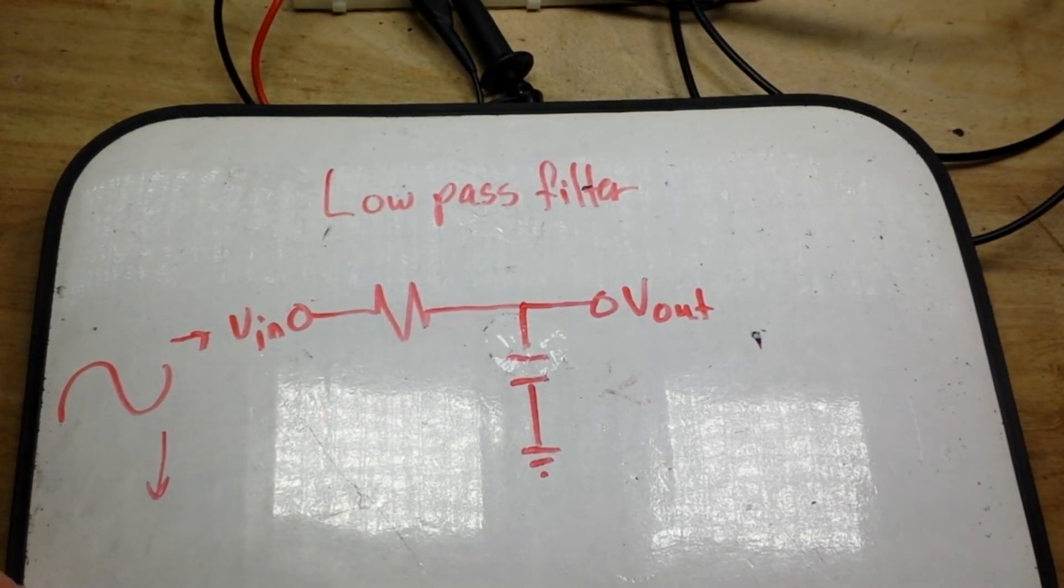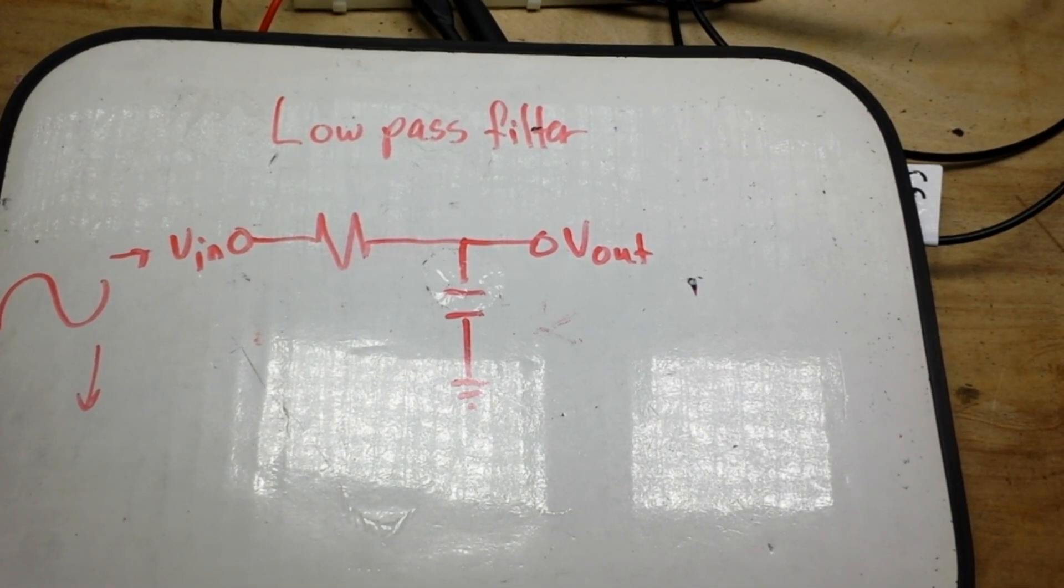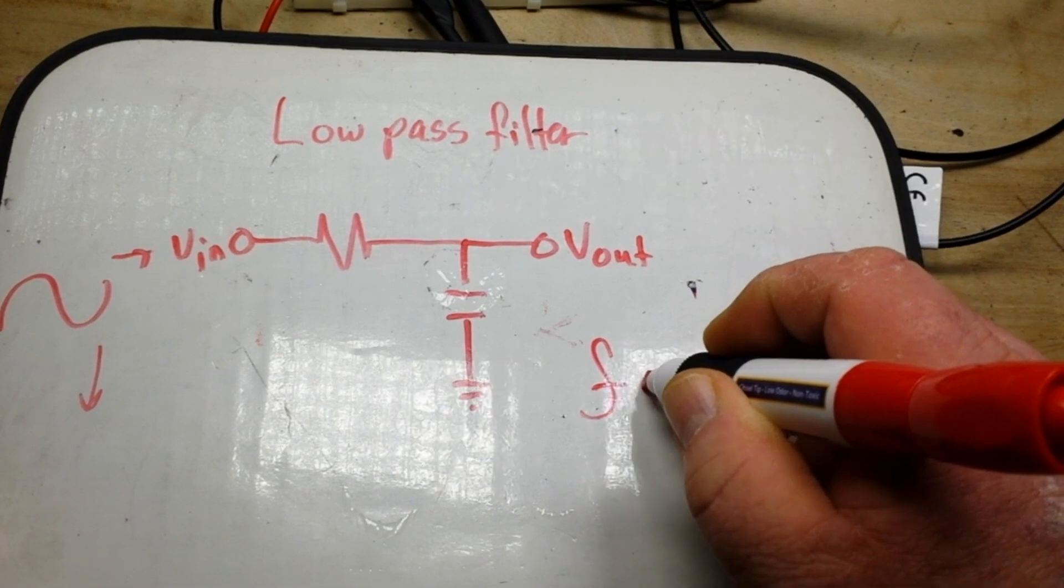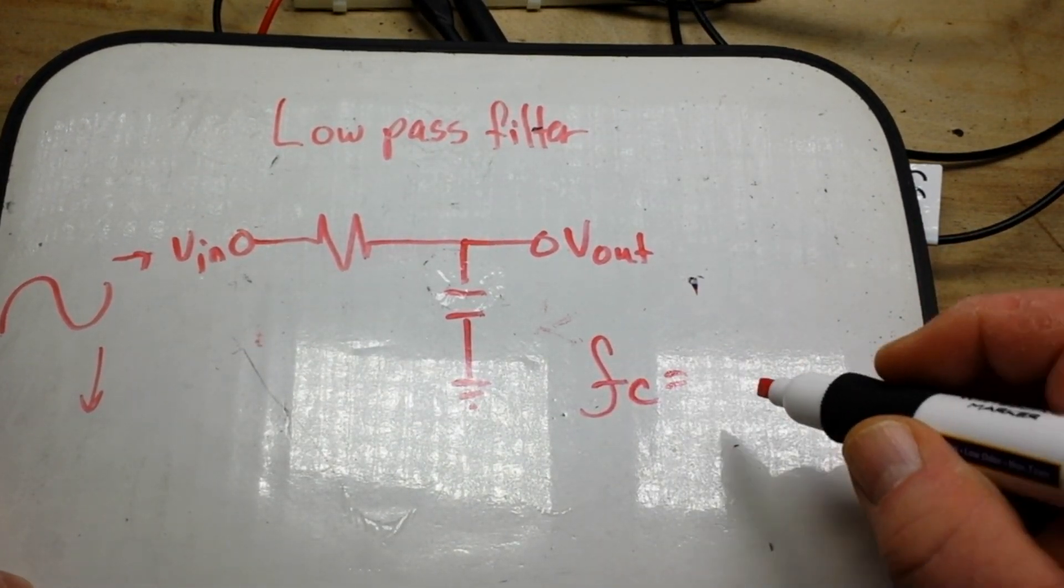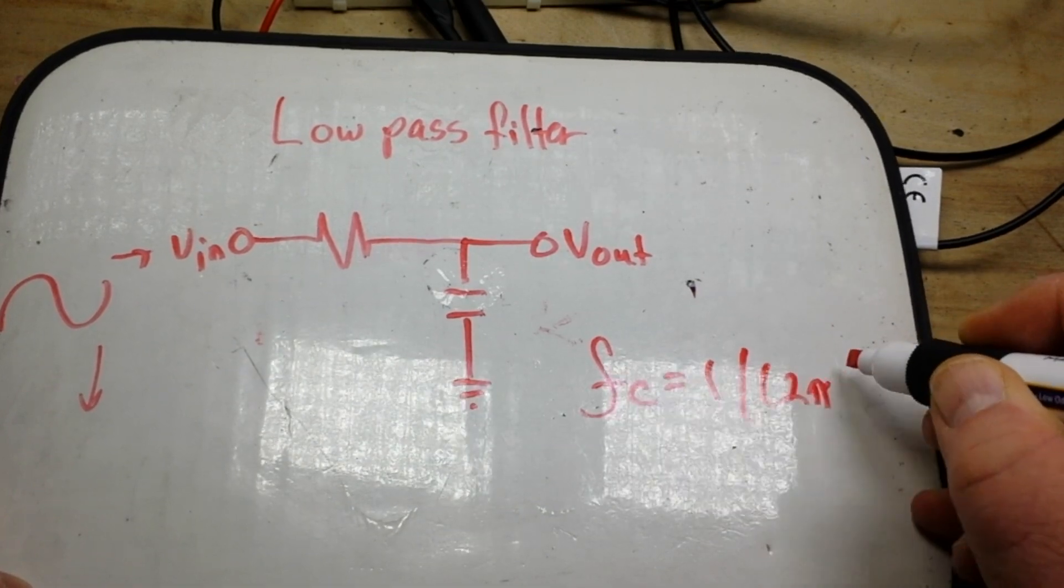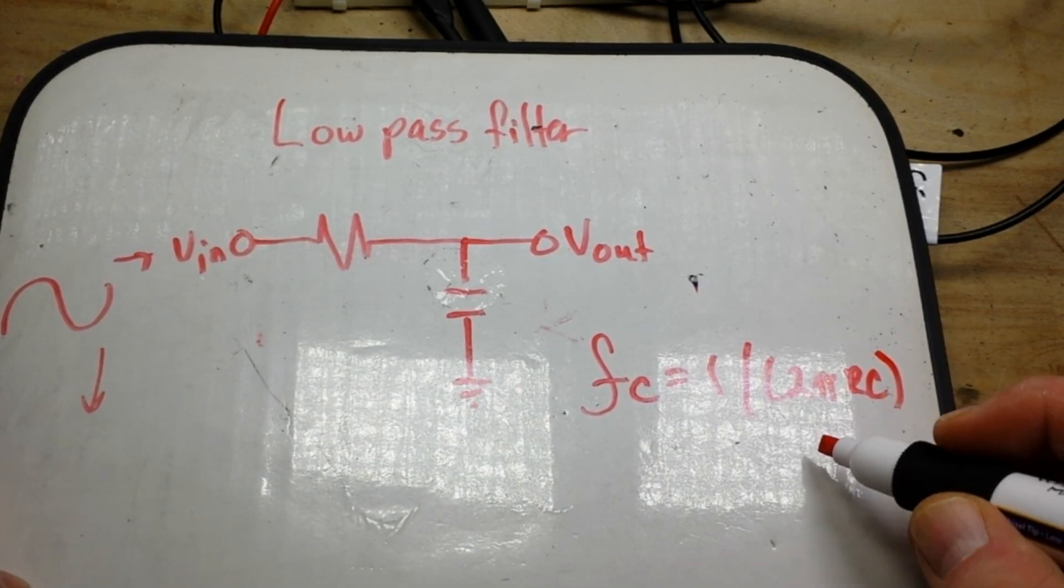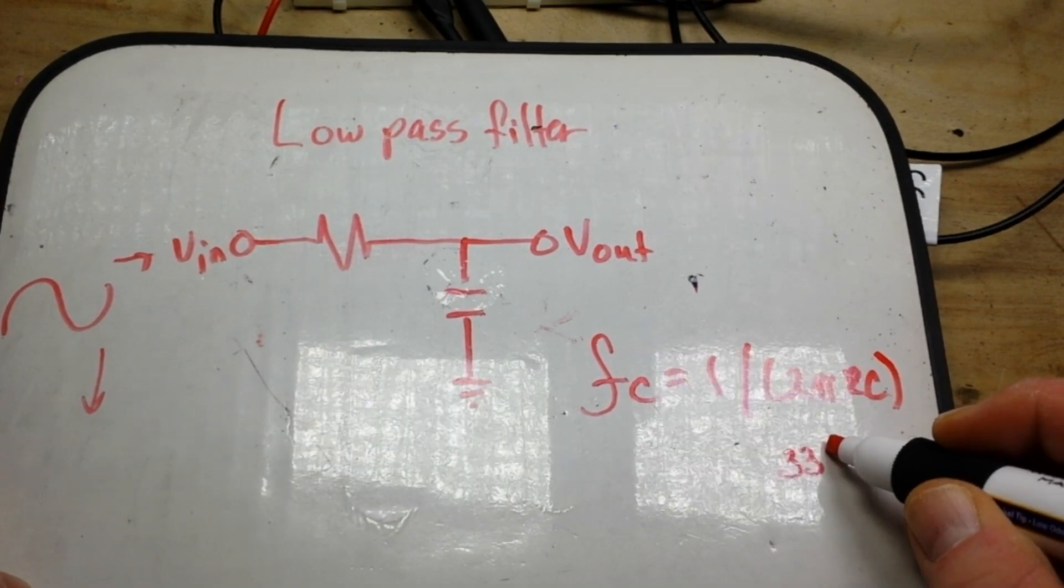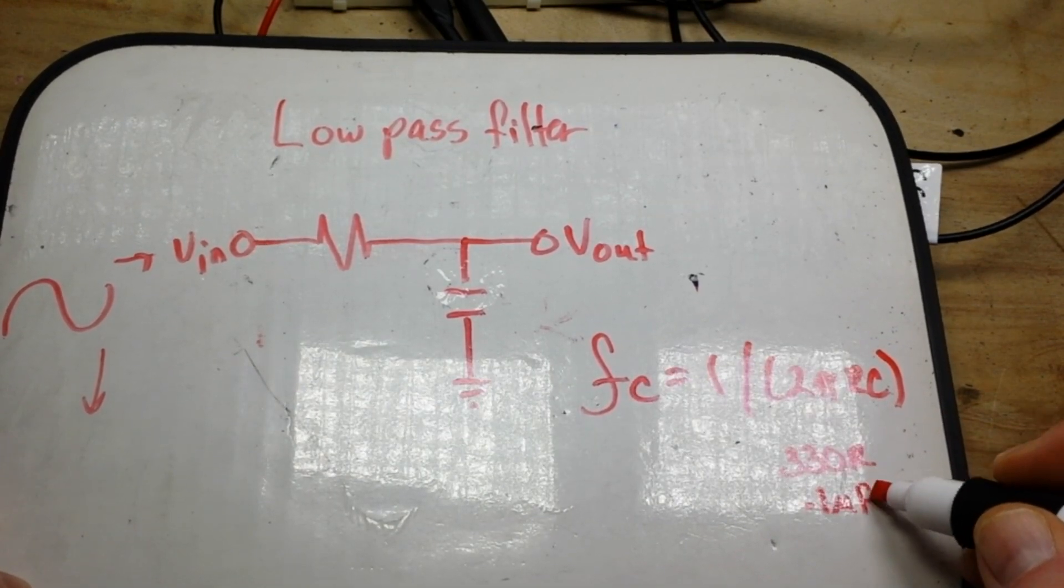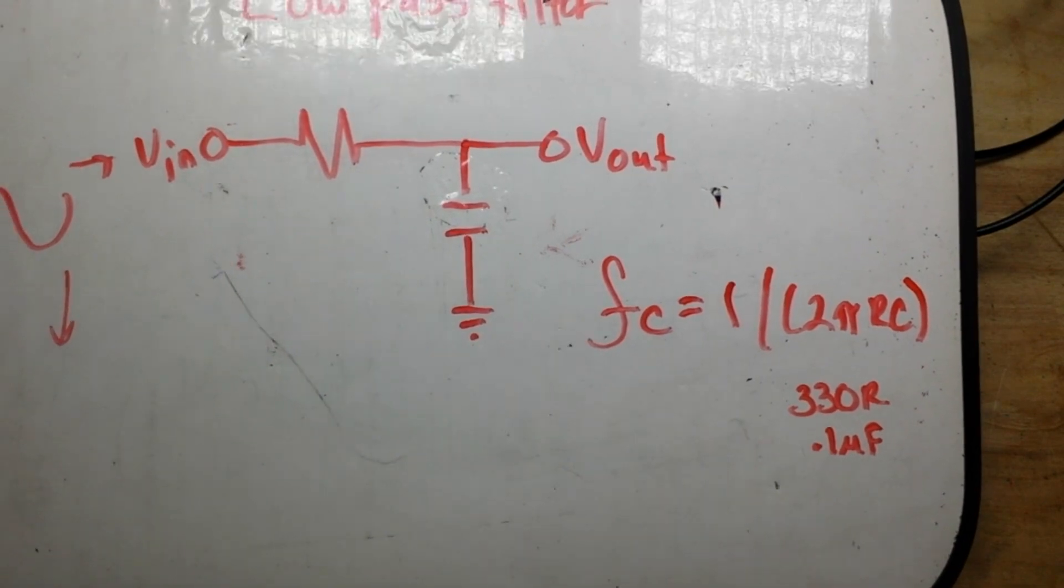When we run our signal in here, we'll run signal here and also to ground. Our formula for figuring it out is FC equals, so frequency cutoff is equal to one divided by two pi times R times C. Our R is of course 330 ohms and our C is 0.1 microfarad. Of course you need to translate those into farads, but you can do that yourself.